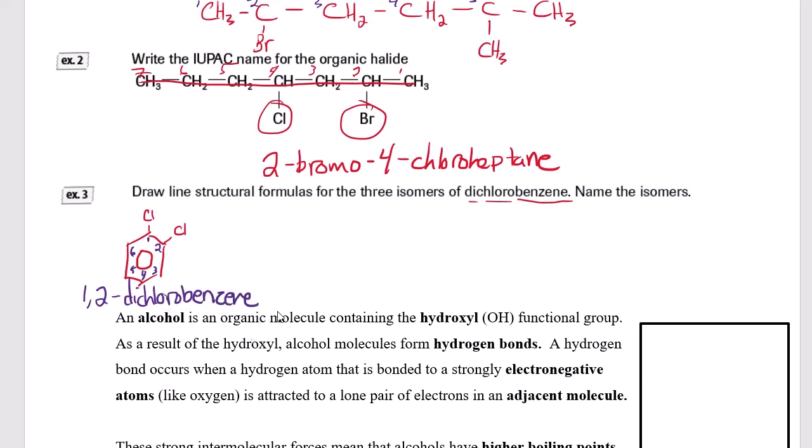Why don't you pause the video here and see if you can figure out what the other two isomers would be. There are only two other possible isomers. Draw them in, and then I'll pause my recording as well. I'll draw mine in and you can see if you're right. Okay, so let's see what these are going to look like.